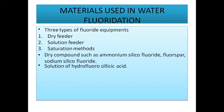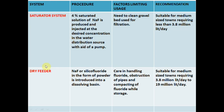There are three types of equipment used for water fluoridation: dry feeder, solution feeder, and the saturation method. In dry feeder, compounds such as ammonium silicofluoride, fluorspar, or sodium silicofluoride are used in powder form. In solution feeder, hydrofluorosilicic acid is used. In the saturation system, a 4 percent saturated solution of sodium fluoride is injected at the desired concentration into the water distribution system using a pump.